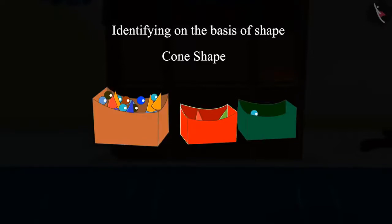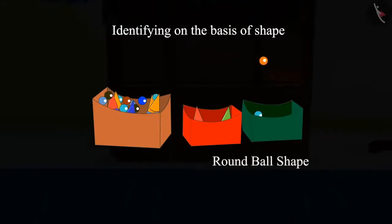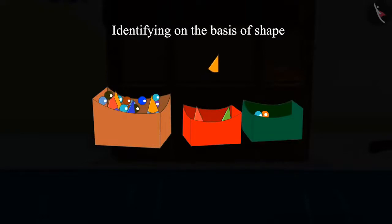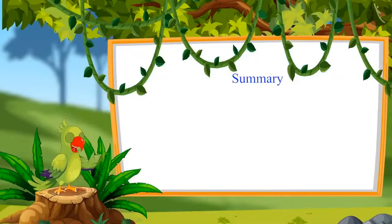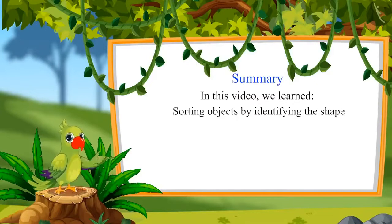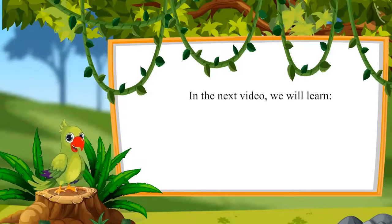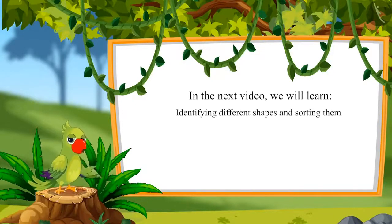Children, can you tell into which box the marble should be dropped? Yes, it will go into the round ball box. After this, Chotu picked up another piece — children, do you know which box it belongs to? If it is like the shape of a cone, it goes in the cone box. By identifying the shape, Chotu separated the cone-shaped pieces from the round ball-like marbles. That was all for today. In this video, we learned sorting objects by identifying the shape. In the next video, we will learn identifying different shapes and sorting them. Till then, bye children.